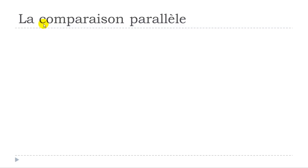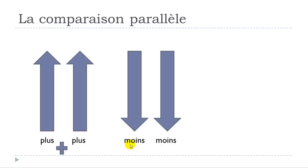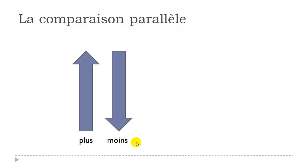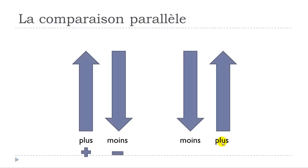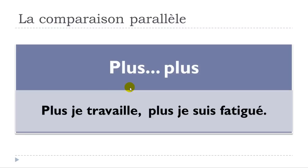LA COMPARAISON PARALLÈLE. Basically you would like to compare two things going in the same direction. So it could be PLUS ET PLUS — more and more — or in the other direction MOINS ET MOINS — less and less — or AUTANT AUTANT — as much as. Other possibilities are PLUS ET MOINS, or MOINS ET PLUS. The first example is PLUS ET PLUS: PLUS JE TRAVAILLE, PLUS JE SUIS FATIGUÉ — the more I work, the more I am tired. Structure: PLUS + clause + virgule + PLUS + clause.